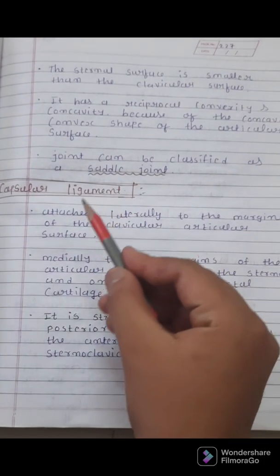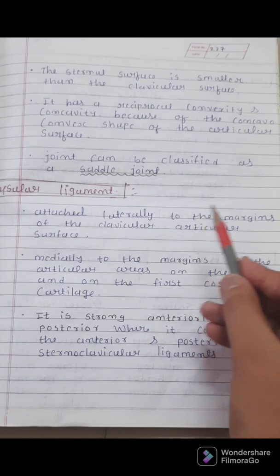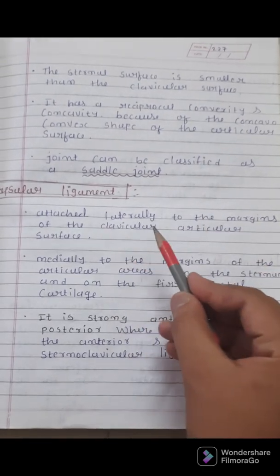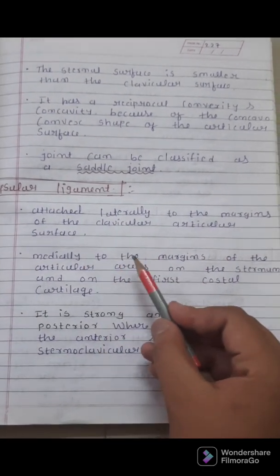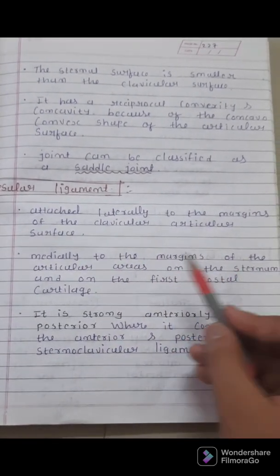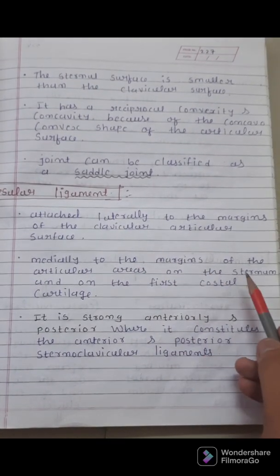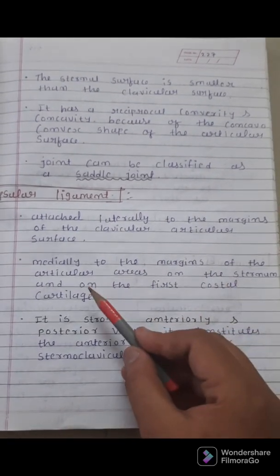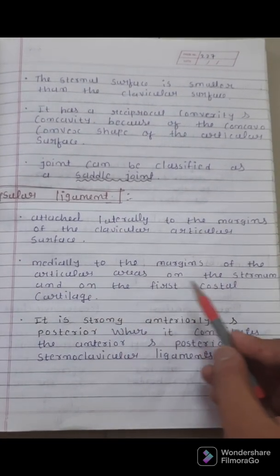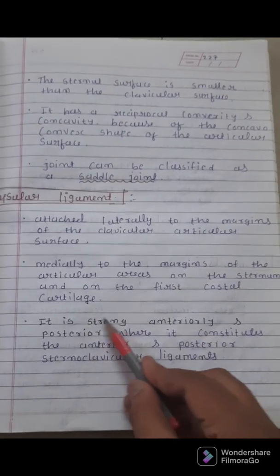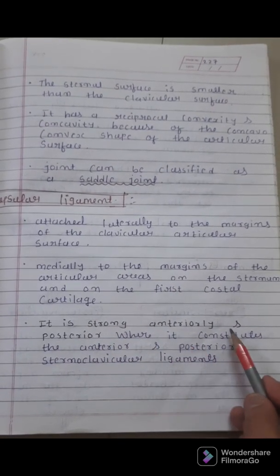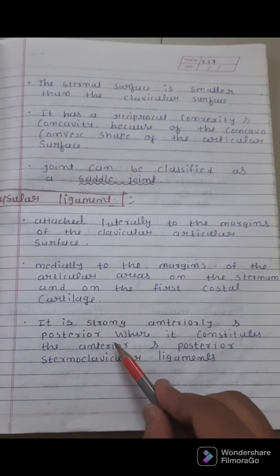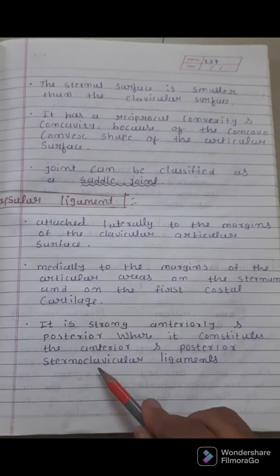The capsular ligament is attached laterally to the margin of the clavicular articular surface and medially to the margin of the articular area on the sternum and on the first costal cartilage. It is strong anteriorly and posteriorly, where it constitutes the anterior and posterior sternoclavicular ligaments.